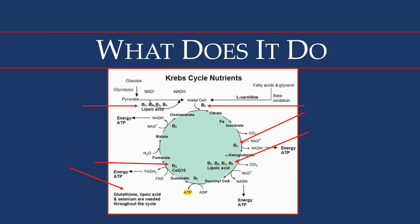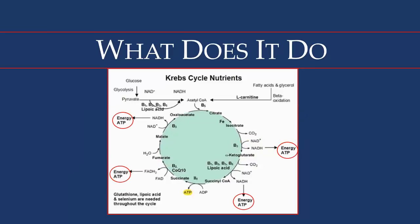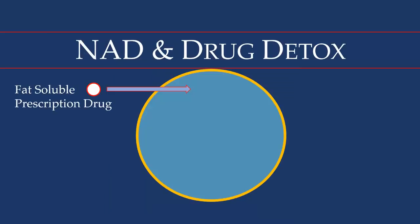Here are arrows pointing to all the different nutrients that we know are required for the production of ATP — all the B vitamins, lipoic acid, etc. And here I've circled on the circular spiral the production of ATP. You'll also see arrows pointing to where NAD is part of this cycle of producing ATP.